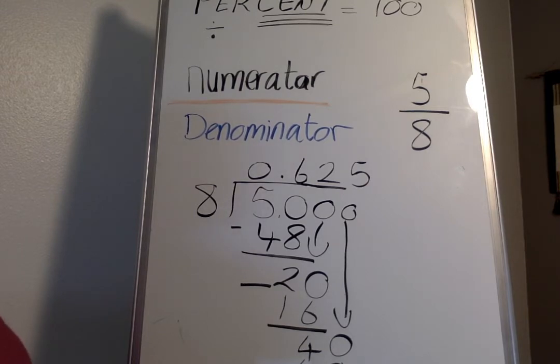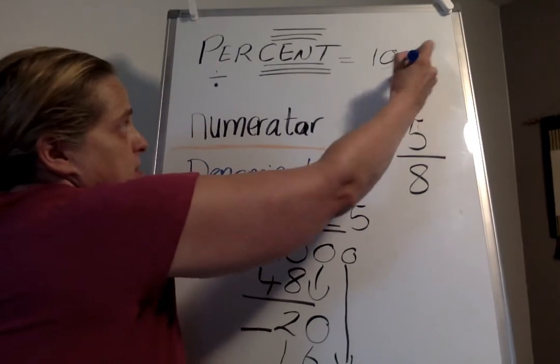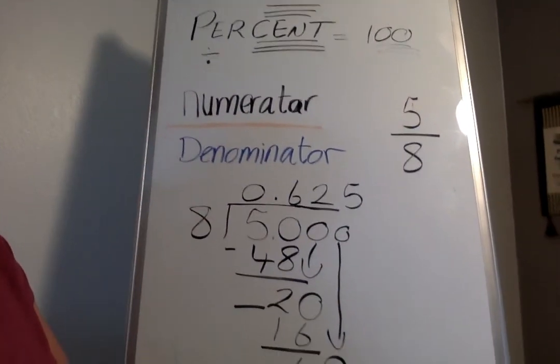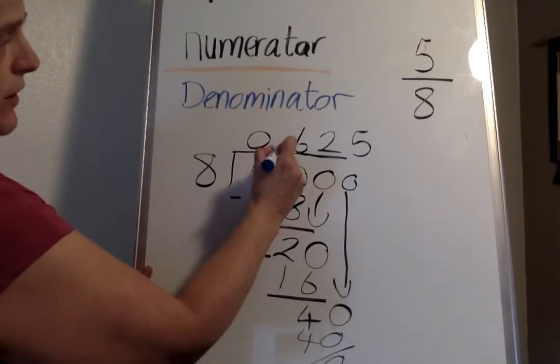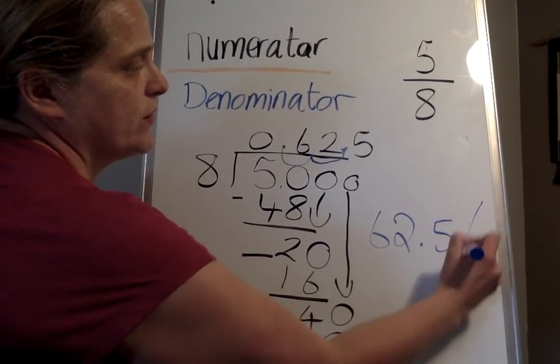Take that decimal and change it to a percent. Remember, percent—there's two zeros, therefore you move the decimal two times: one, two. And the percent is 62.5 percent.